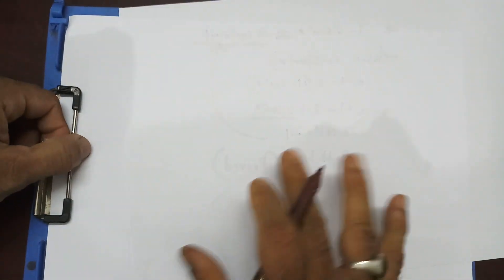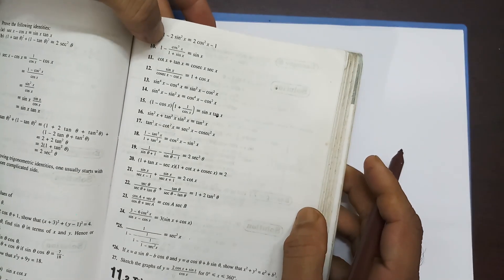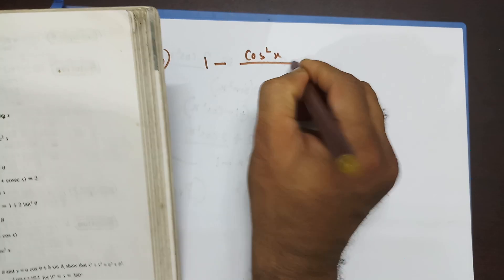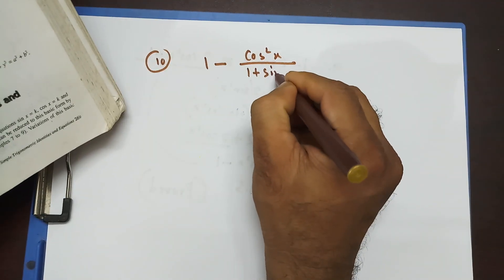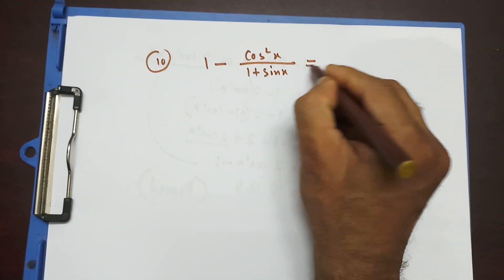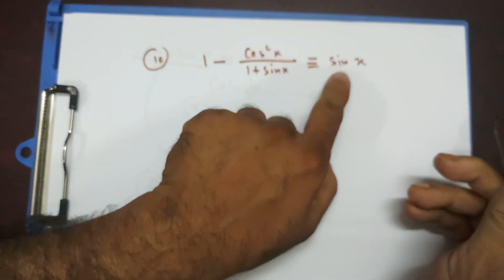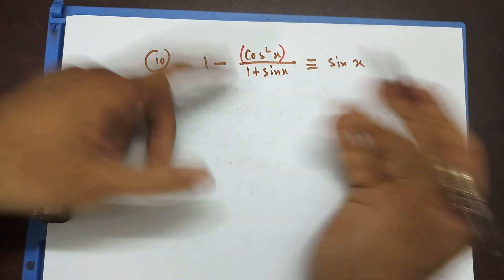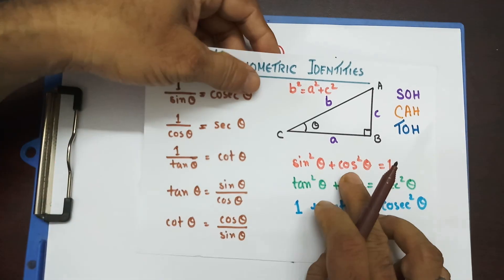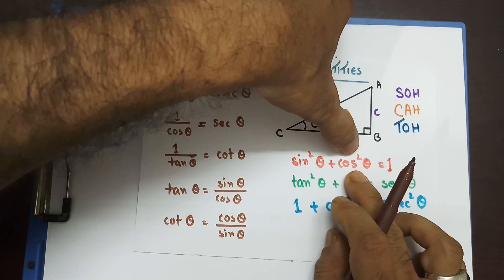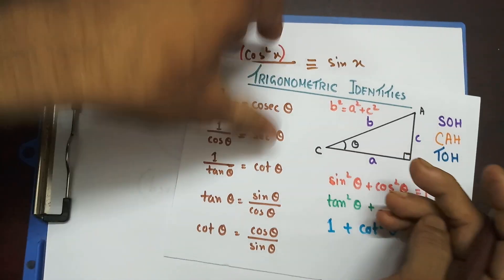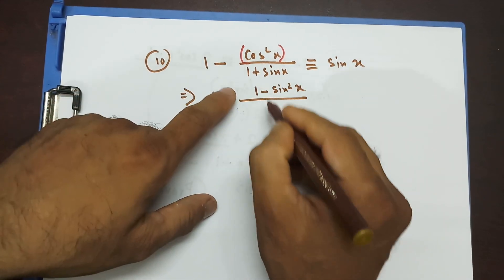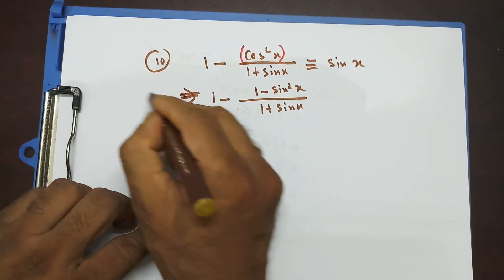Let's do question number 10. Question 10 says: 1 minus cos squared x divided by 1 plus sin x is identical to sin x. Comparing sides, there's no cos squared x on the right, so I'll change cos squared x using the identity: cos squared theta equals 1 minus sin squared theta. On the numerator I replace cos squared x with 1 minus sin squared x, and the denominator remains 1 plus sin x. This is the left-hand side.